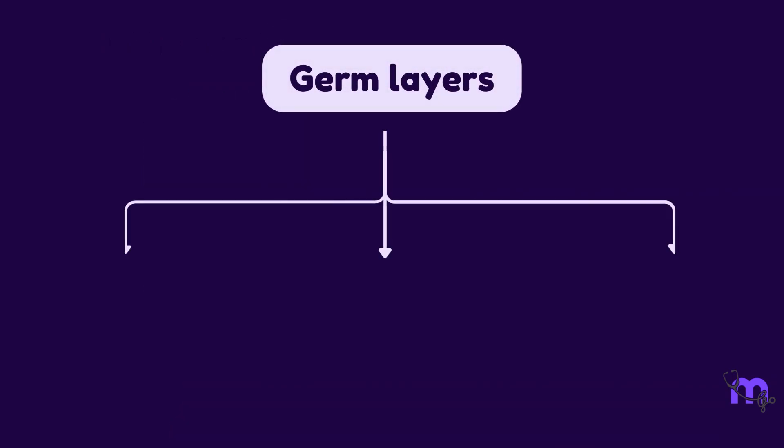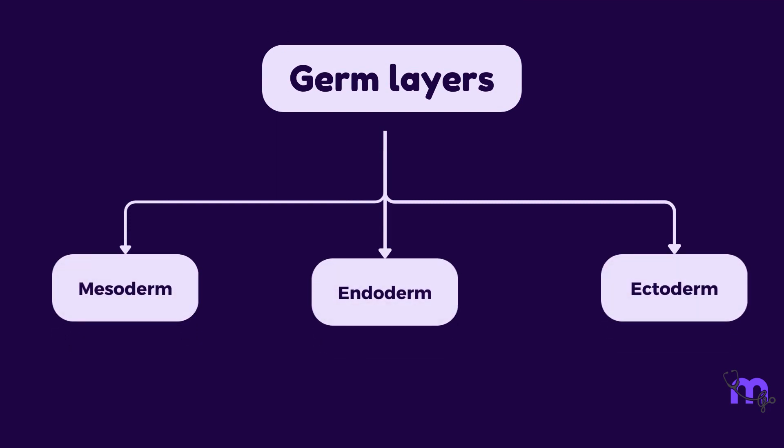Embryologically, epithelia are derived from all three germ layers: ectoderm, mesoderm and endoderm.